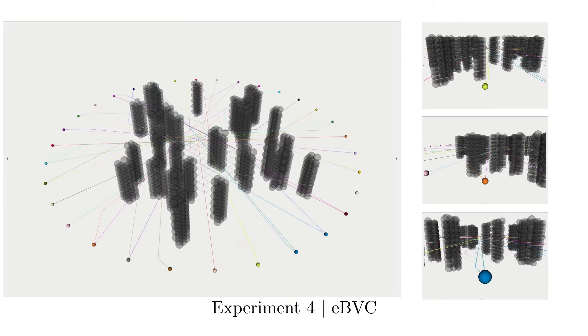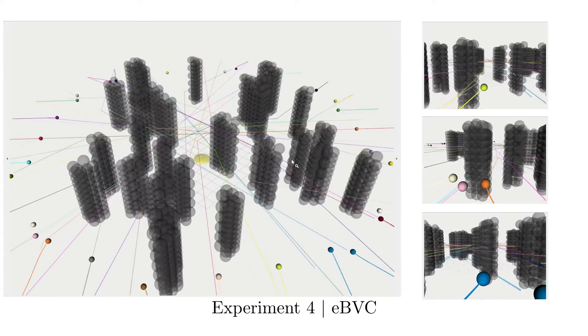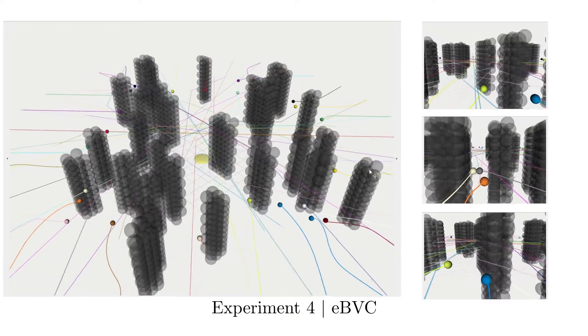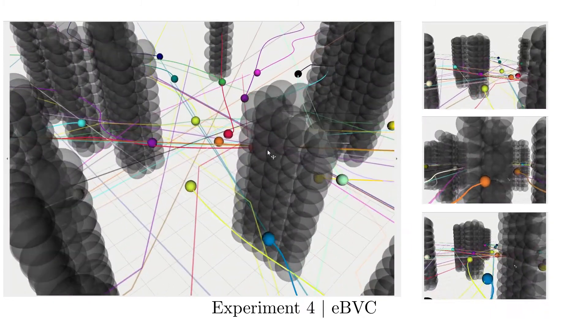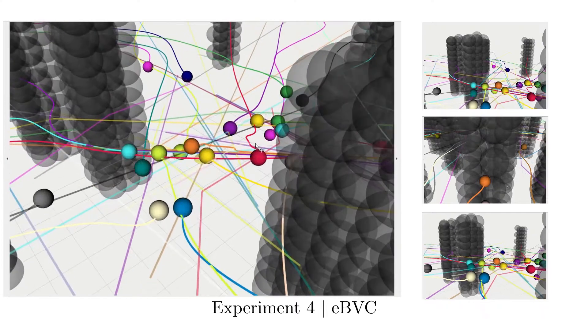When eBVC is used to plan trajectories in the same scenario, 8 out of 32 robots deadlock and 13 out of remaining 34 get involved in at least one collision during their navigation.